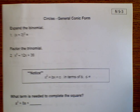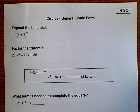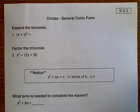Hello, this is Algebra 2, topic 9-3. We're going to talk about circles and the general conic form. What we're going to do is take equations of circles and turn them into the conic form so that we can interpret h, k, and radius.